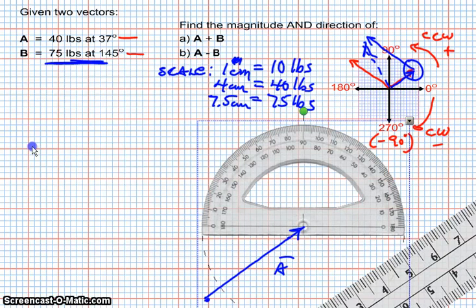And so I'll use red for that. There is the beginning of the B vector. That's the tail of the B vector. And it's going to be at 145 degrees, which would be right there.